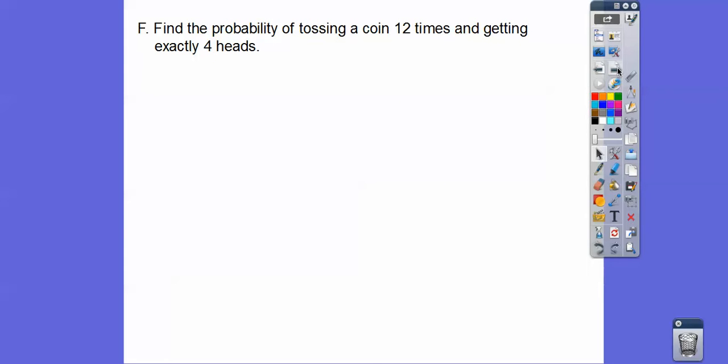Find the probability of tossing a coin 12 times and getting exactly four heads. This is a binomial distribution because you either get heads or tails. What's the probability of getting exactly four heads? We use our formula, the probability that K equals four. So K is going to be four right there, and the N is 12 in this case.